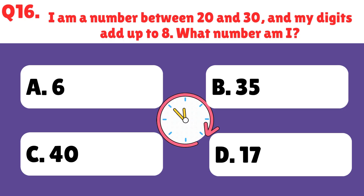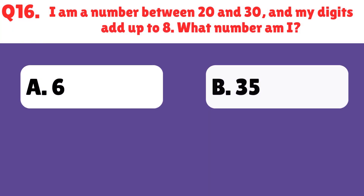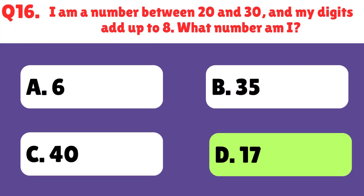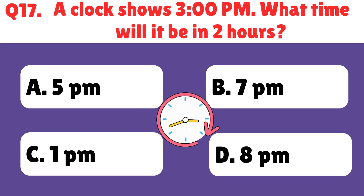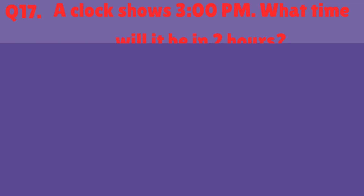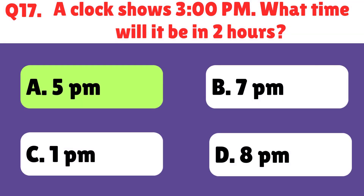My digits add up to 8. What number am I? I am 17. A clock shows 3 pm. What time will it be in 2 hours? The right answer is 5 pm.